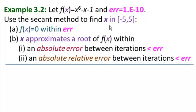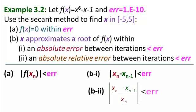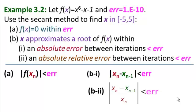So for each root we find, we have three parts. f(x) equals 0 within error means that the absolute value of f(xn) must be less than the error — that's the kind we did in example 1. The absolute error between iterations means |xn minus xn-1| has to be less than 10 to the minus 10. And the absolute relative error between iterations is |xn minus xn-1| divided by xn, which also has to be less than 10 to the minus 10.